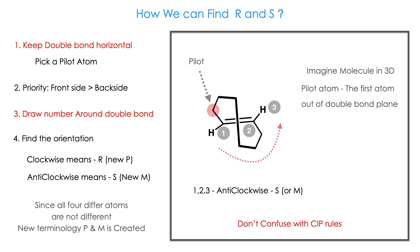Let us look at the molecule here. Cyclooctene double bond is horizontal. Then you have to choose the pilot atom. Pilot atom is the first atom out of the double bond plane. Here is one pilot atom. Then give the number from the pilot atom, so one, two, three. If you do it, it is an anti-clockwise direction. It is S. Our new name is M.